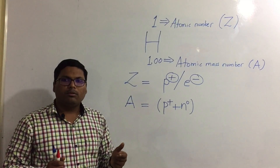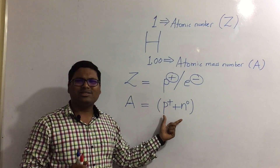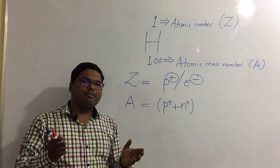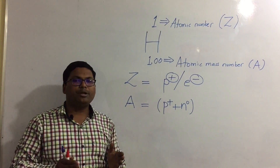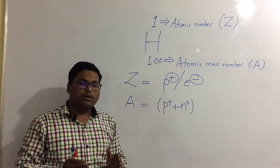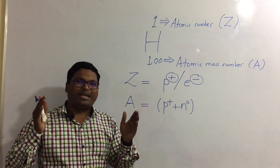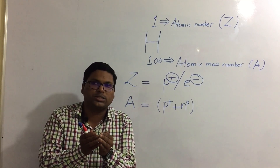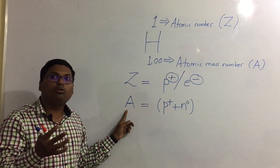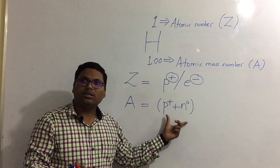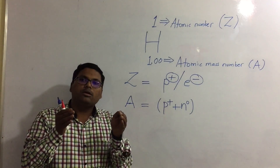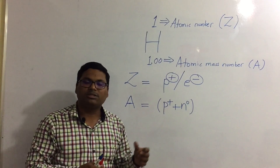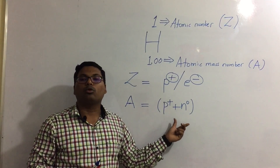Now why does the atomic mass number include only protons plus neutrons? When we compare the weight of protons and neutrons with electrons, electrons have very negligible mass. So atomic mass or atomic weight is considered to be accumulated in the center — the nucleus. That is why atomic mass number is written as the sum of protons and neutrons, since it focuses on the nucleus.